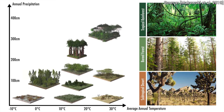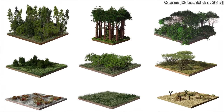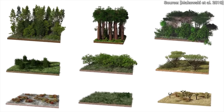You see, if there is no rain and it's super cold, we get a tundra. With no rain and high temperature, we get a desert. And if we keep the temperature high and add a ton of precipitation, we get a tropical rainforest. And this technique promises to be able to simulate these, and everything in between.